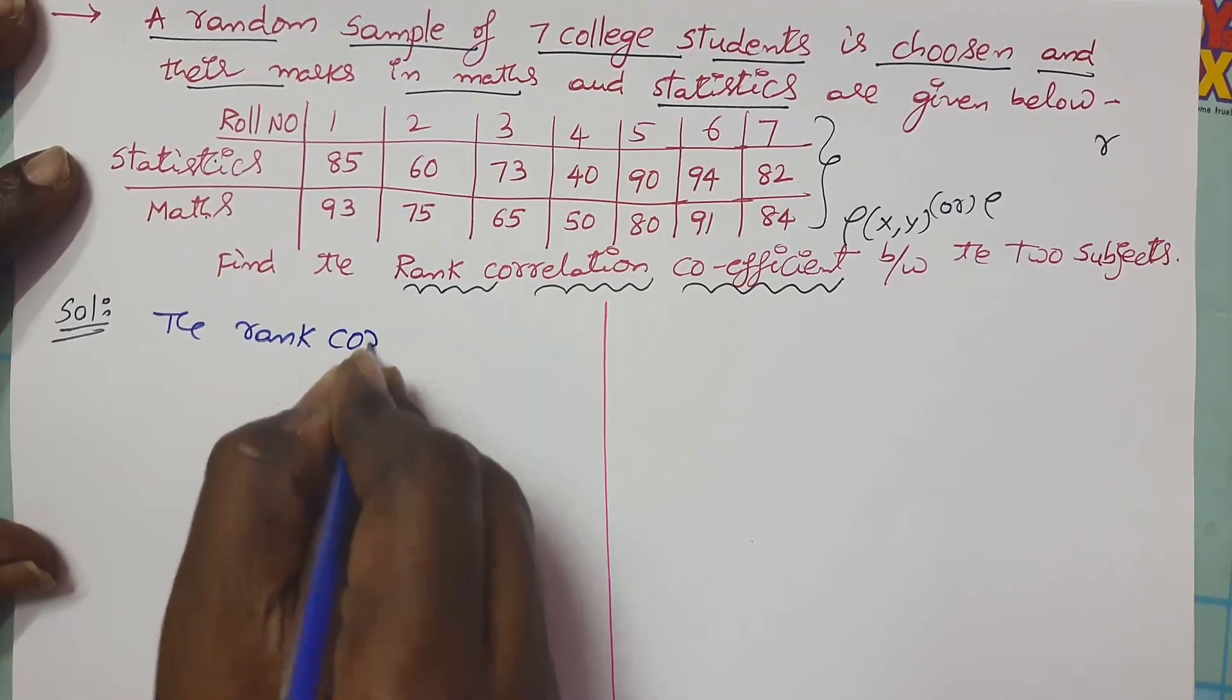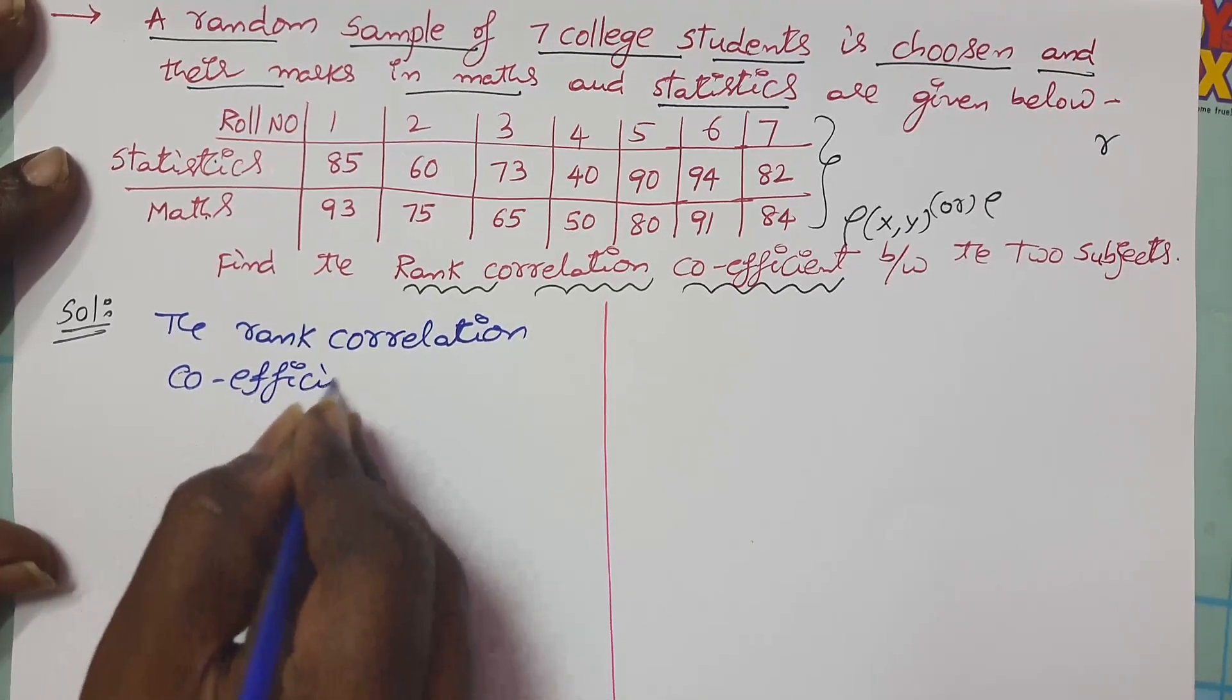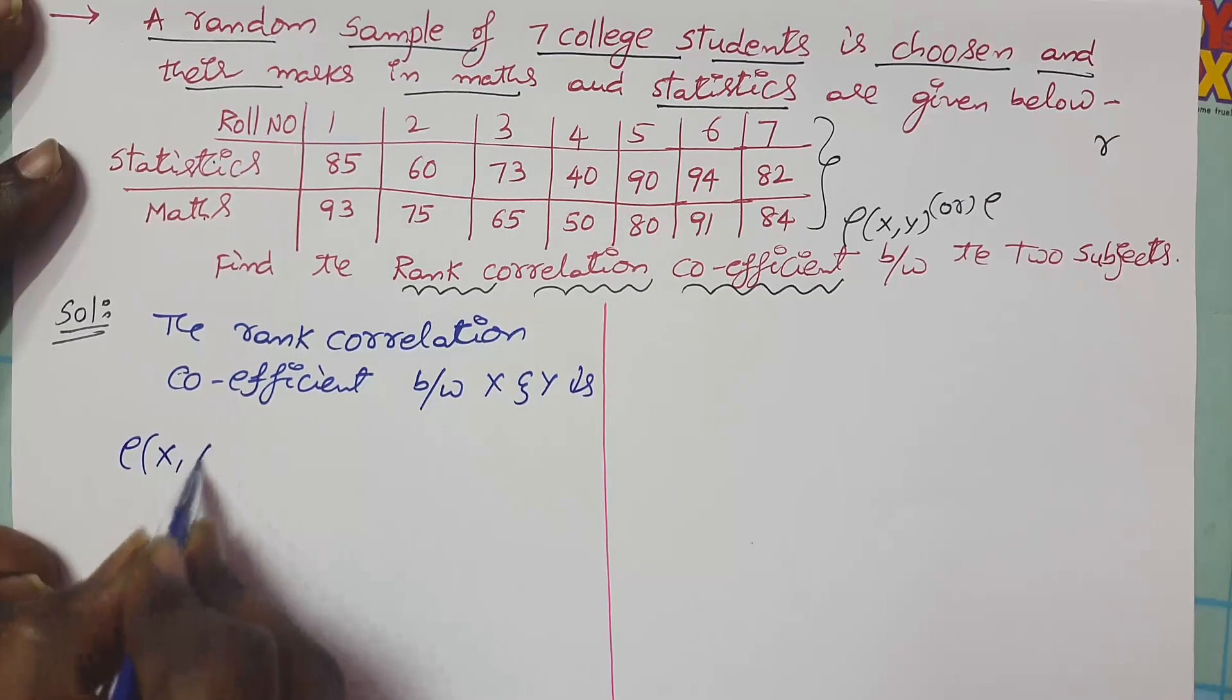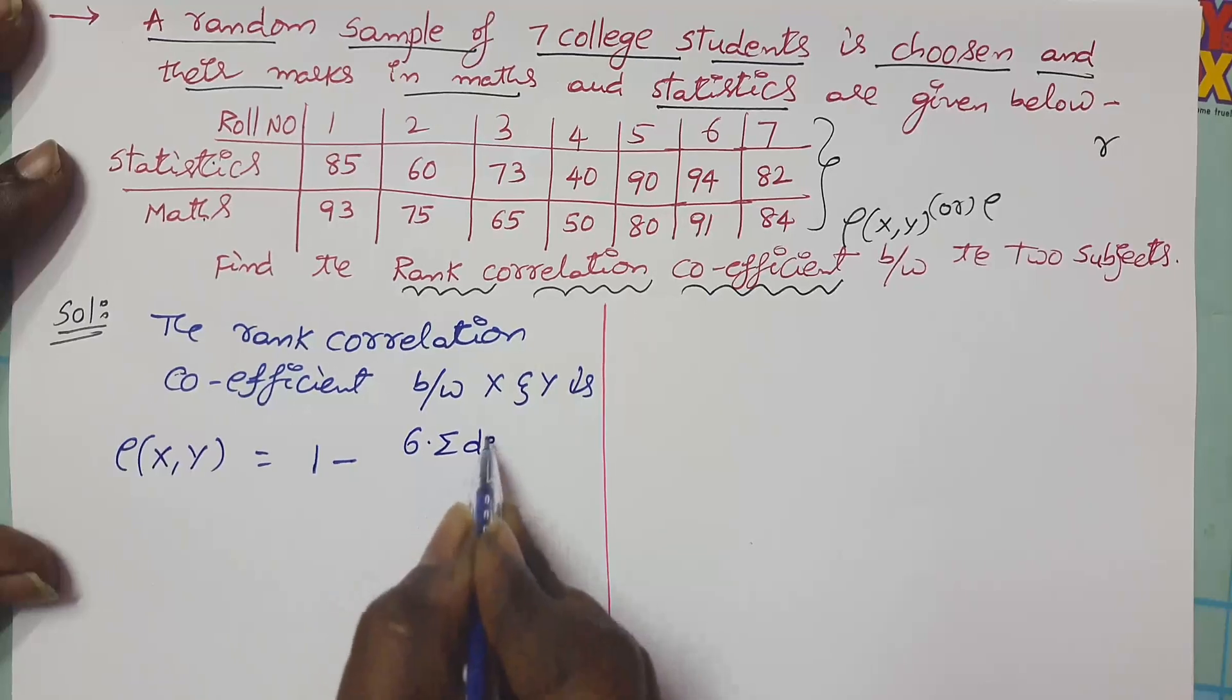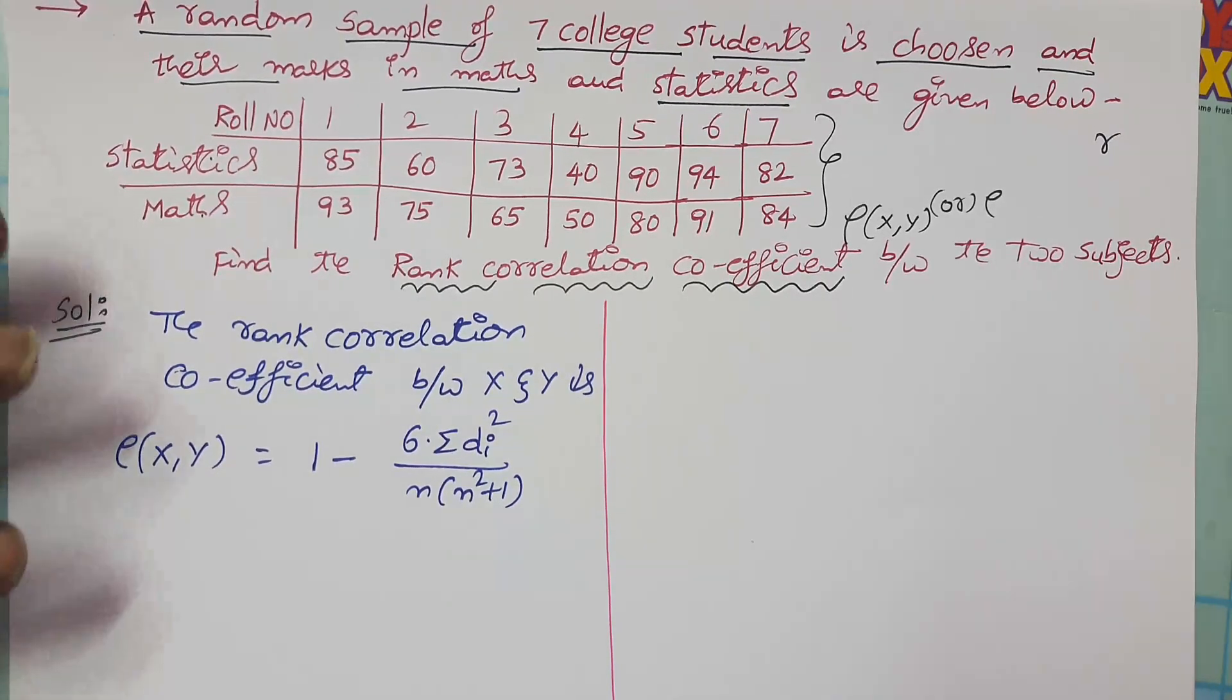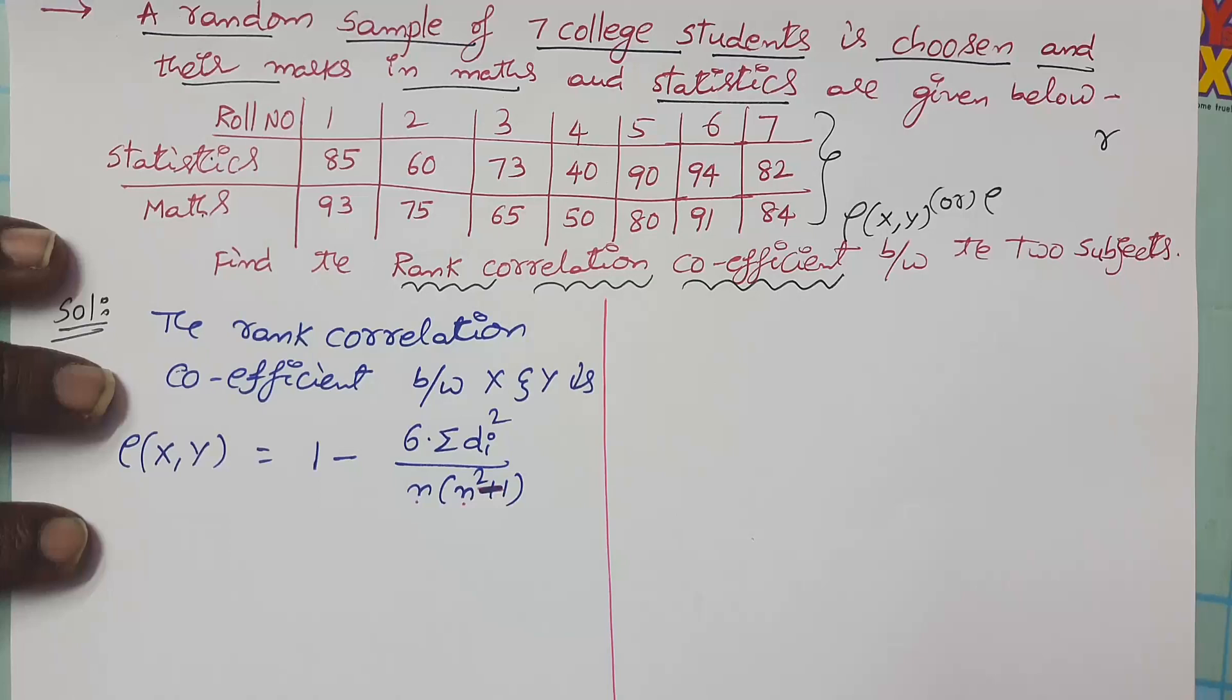First of all, I will give the formula for rank correlation coefficient. The rank correlation coefficient between x and y is rho(x,y) equals 1 minus 6 times sum of di squared by n times n squared minus 1. One small correction here: in this formula it is n times n squared minus 1, please correct it.